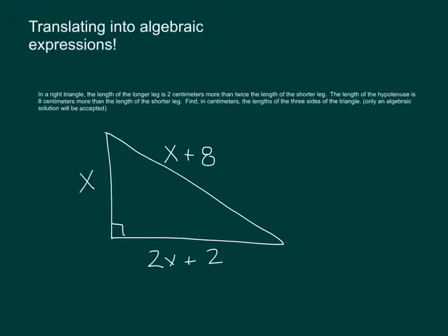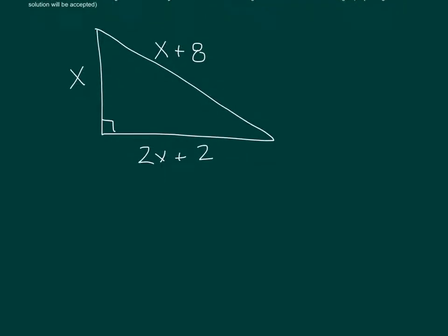And we know that we need to use Pythagorean theorem here. So I'm going to set this up and I'm going to have to do some foiling. So I know I'm going to have my hypotenuse squared is equal to the shorter leg squared plus the longer leg squared.